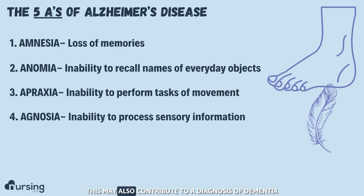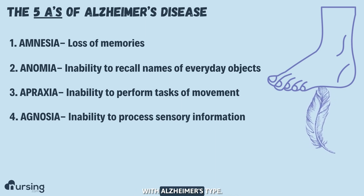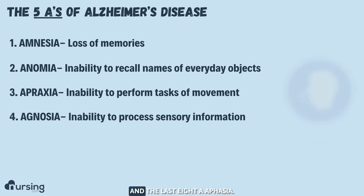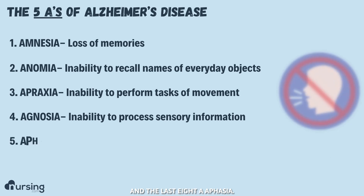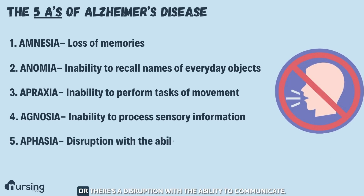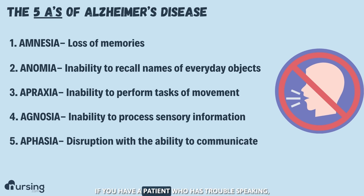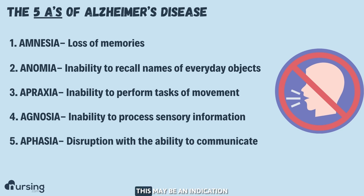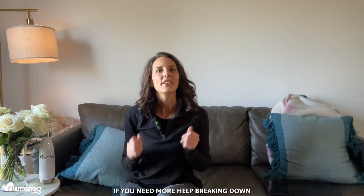this may also contribute to a diagnosis of dementia with Alzheimer's type. And the last A is aphasia. Aphasia is the inability to speak or there's a disruption with the ability to communicate. If you have a patient who has trouble speaking, this may be an indication that they may have Alzheimer's type dementia.